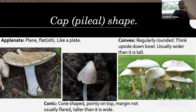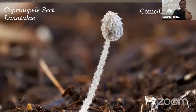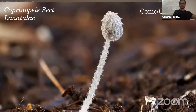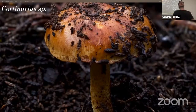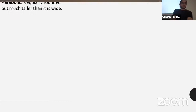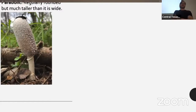Convex is regularly rounded like an upside-down bowl, usually wider than it is tall. Coprinopsis species are kind of conical when they start and usually get upturned later. A parabolic mushroom is regularly rounded but much taller than it is wide — Coprinus comatus is a good example.